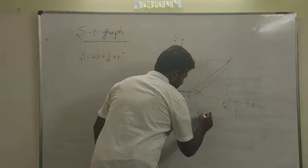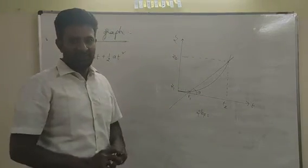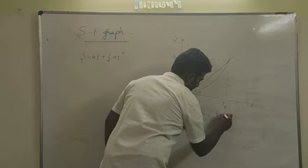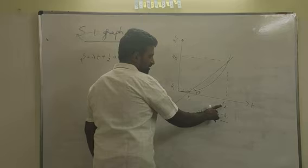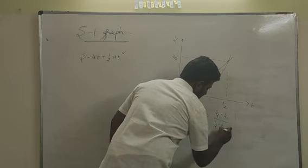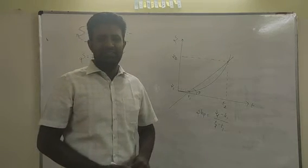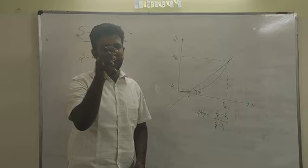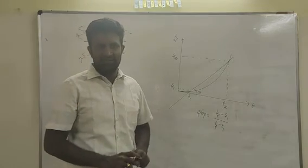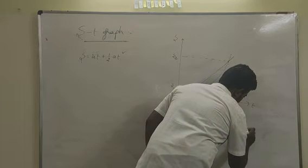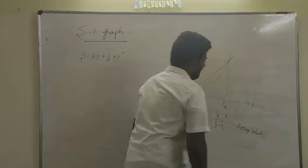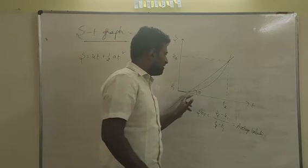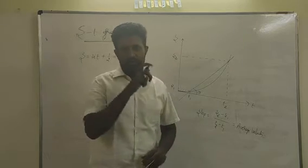The slope equals (y2 − y1) / (x2 − x1). Here y2 is s2 and y1 is s1, so slope = (s2 − s1) / (t2 − t1). Now observe: s2 − s1 is the change in position, and t2 − t1 is the time interval. Change in position divided by time interval gives displacement divided by time interval, which gives you average velocity. So, to calculate the average velocity between t1 and t2, draw a straight line passing through (t1, s1) and (t2, s2) and find the slope of that line.